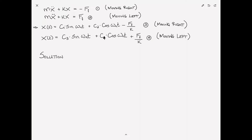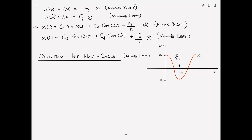To come up with a solution, we consider the first half cycle: we displace the block by X sub zero to the right and let it go, so initially the block is moving to the left. The first peak is X sub zero, the first trough amplitude is X1 at position negative X1, and at the end of the first cycle the second peak is X2.